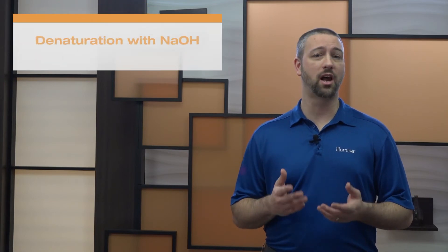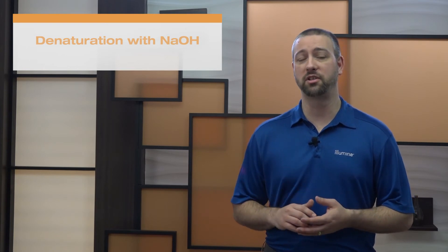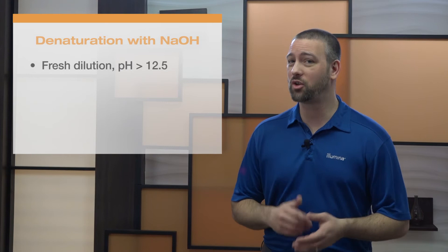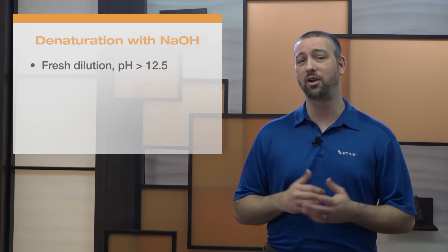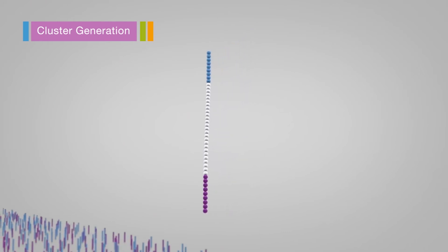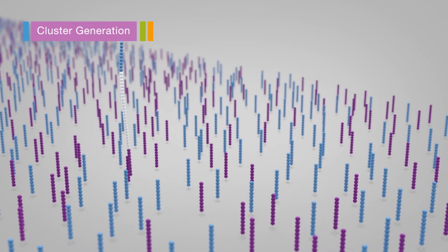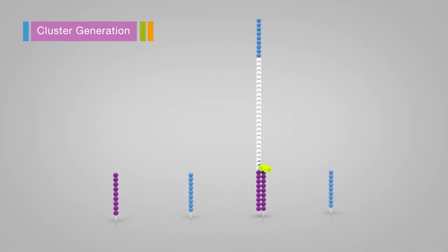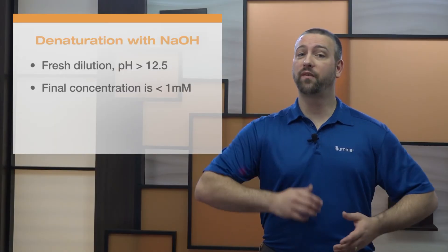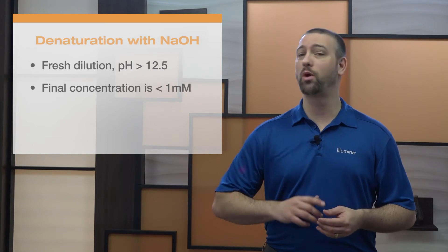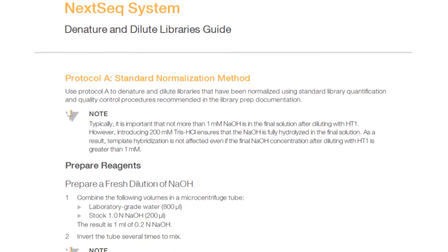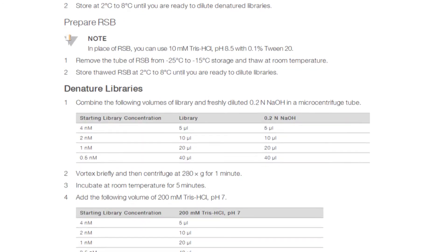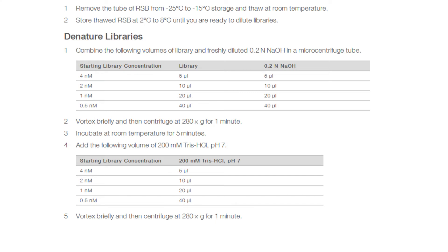Another consideration in arriving at final loading concentration is denaturation. Sequencing libraries commonly use sodium hydroxide to denature the library to prepare hybridization to a flow cell. It is important to ensure that fresh sodium hydroxide with a pH of 12.5 or greater is used. Sodium hydroxide that is not freshly diluted can acidify and impair denaturation. Libraries with incomplete denaturation have fewer strands available to bind and cluster on the flow cell, reducing cluster density. Also, ensure the final concentration of sodium hydroxide in the diluted libraries is less than 1 millimolar, as excess sodium hydroxide can inhibit cluster formation. The NexSeq 550 denature and dilution guide uses Tris-HCl to neutralize the pH, and this process can be adopted for other Illumina instruments if needed.